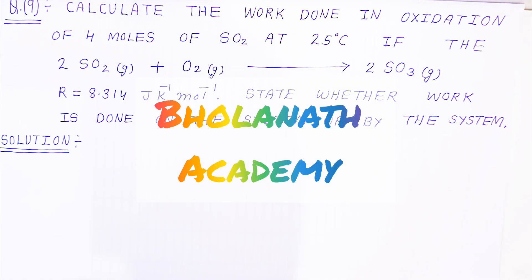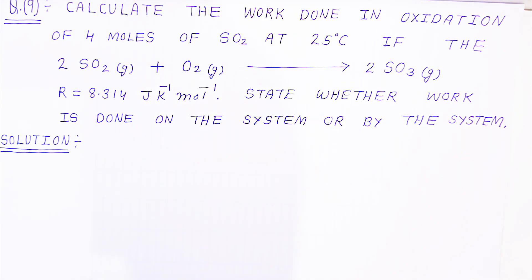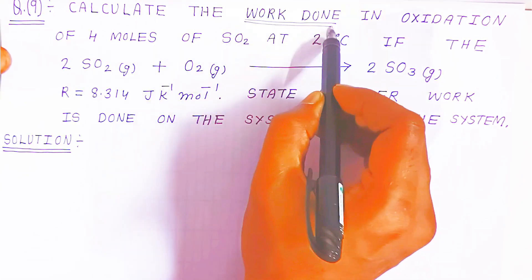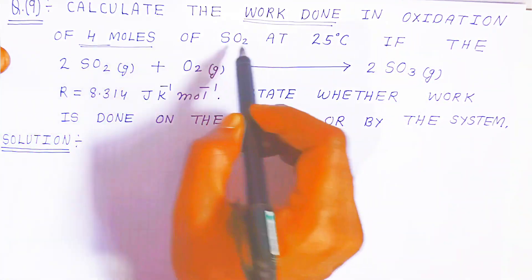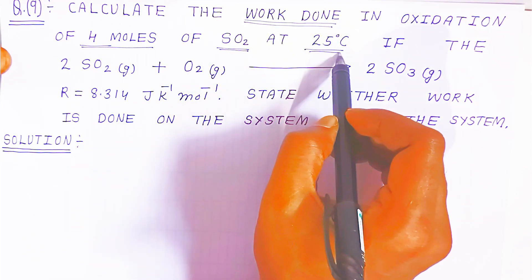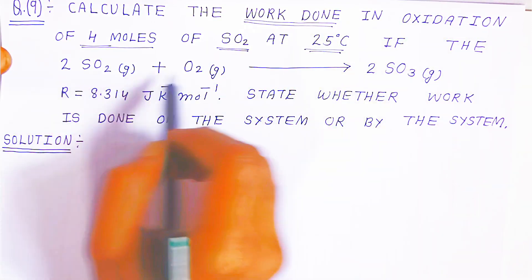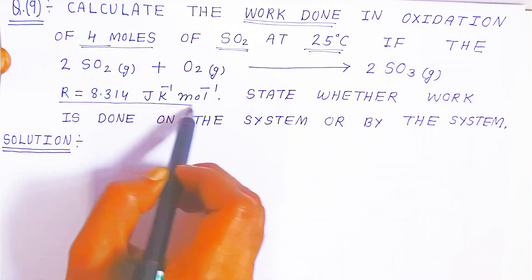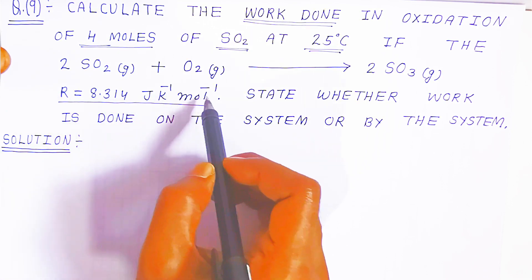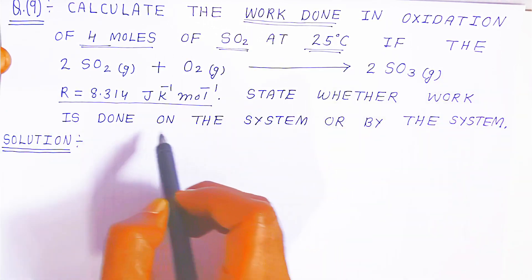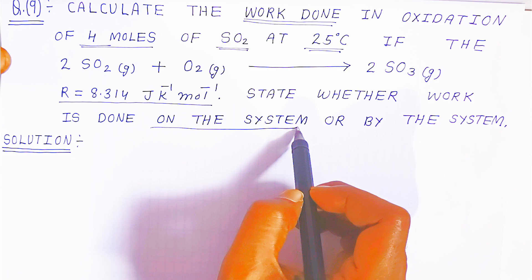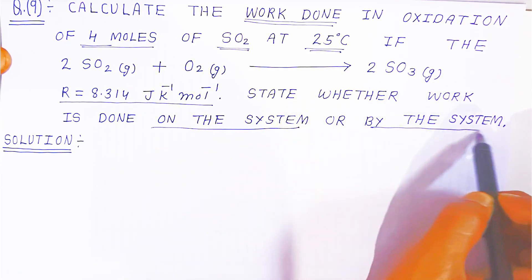Welcome to Bolanath Academy. In this video, we are going to see question number nine: calculate the work done in oxidation of four moles of sulfur dioxide gas at 25 degrees Celsius. The oxidation reaction is given — sulfur dioxide is oxidizing to sulfur trioxide. The universal gas constant R is given as 8.314 joule per kelvin per mole. We also have to state whether the work done is on the system (compression) or by the system (expansion).